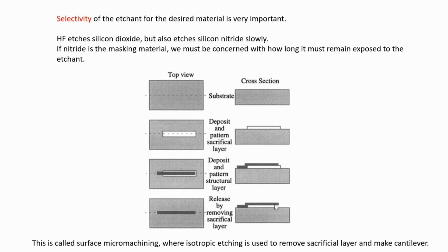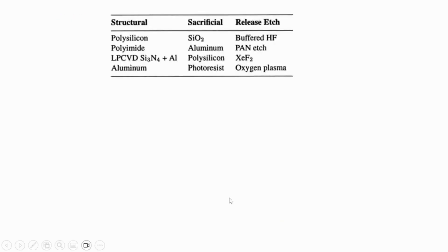It's called surface micromachining because we're actually doing things on the surface or etching on the surface. If I am etching the substrate, or if the substrate is significantly etched by your etchant, we will call it bulk micromachining. That is the difference between surface and bulk micromachining.